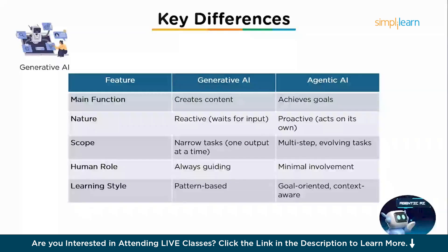For learning style: generative AI is pattern-based, whereas agentic AI is goal-oriented and context-aware. To recap with an analogy: generative AI is like a painter who needs instructions, whereas agentic AI is like a personal assistant who plans your entire week without being told every single step.